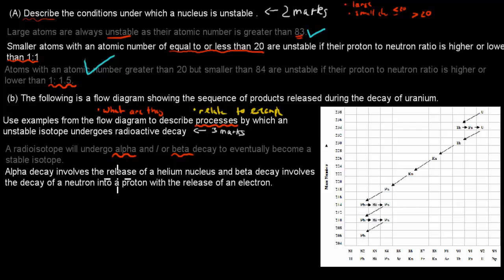Alpha decay involves the release of a helium nucleus, and beta decay involves the decay of a neutron into a proton with the release of an electron.